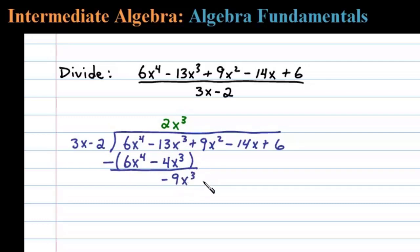And then bring down the rest of the terms. Next we ask what times 3x will be equal to negative 9x to the third.